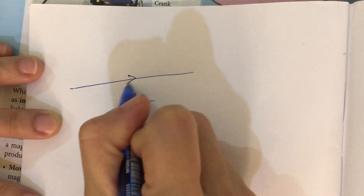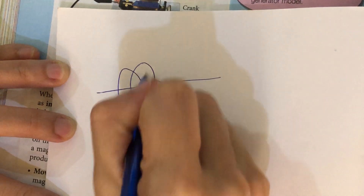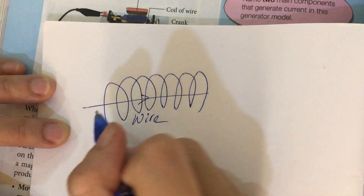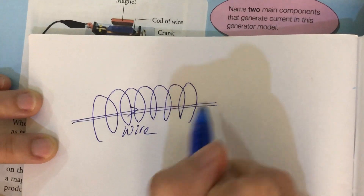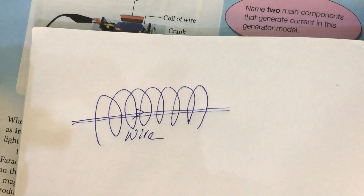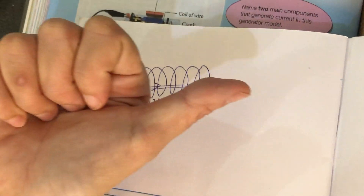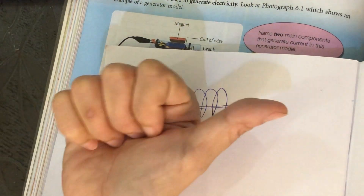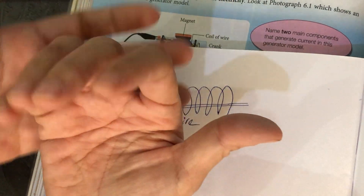You have to understand that when current flows through a conductor — let's say this is a wire — when current flows through a conductor, there will be magnetic flux lines around it. This is not a new thing; you learned it in Form 2. So when there is current flowing through, you have magnetic flux lines. To determine the direction of the magnetic flux line, we use the right-hand grip rule. You grip your right hand — your thumb will point towards the direction of the current, and your fingers will show the direction of the magnetic flux line.